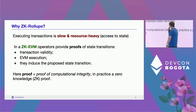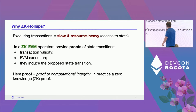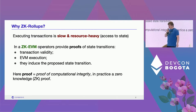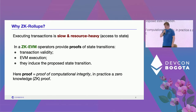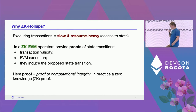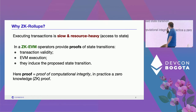A ZK EVM is a particular kind of ZK rollup. What makes it a ZK EVM is the logic part — the logic being executed and proven is the execution of the Ethereum virtual machine. It also means that the transactions obey pretty much the same format as standard L1 transactions.